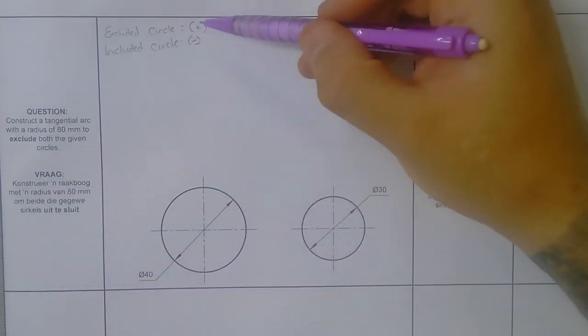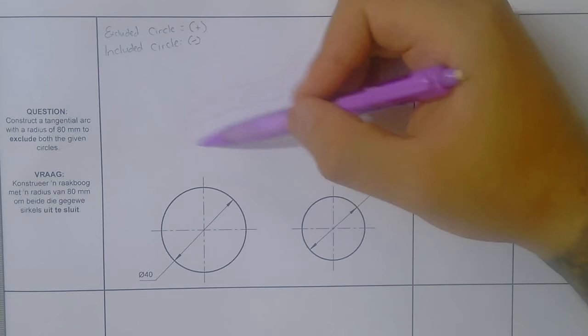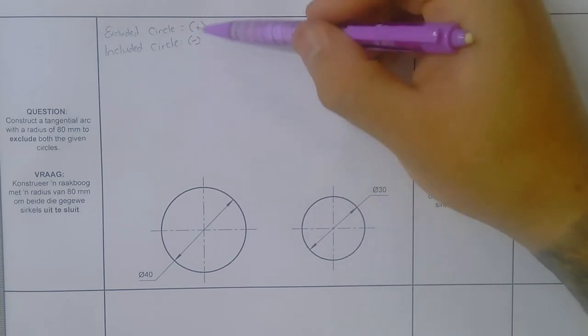With excluded circles, we plus. With included circles, we minus. So we're busy with an excluding circle now, so we're plussing.